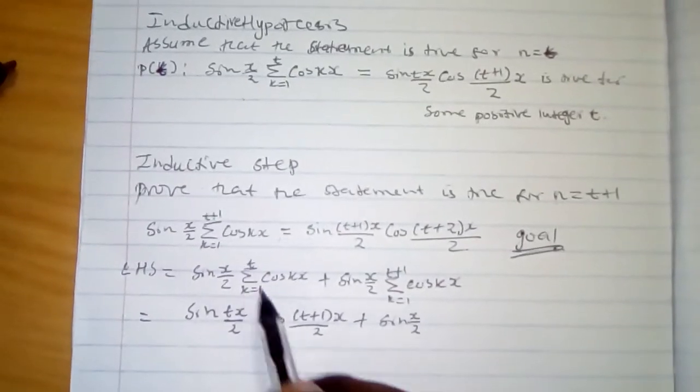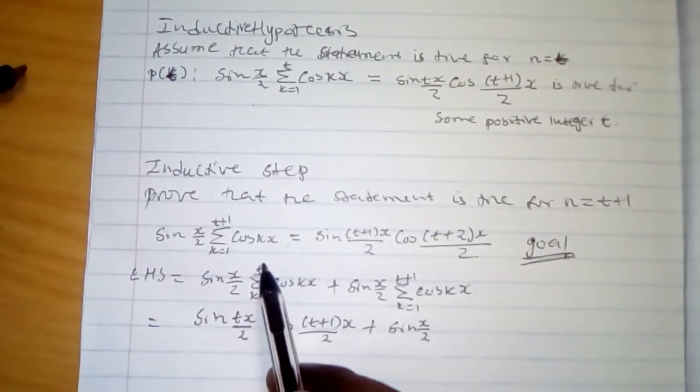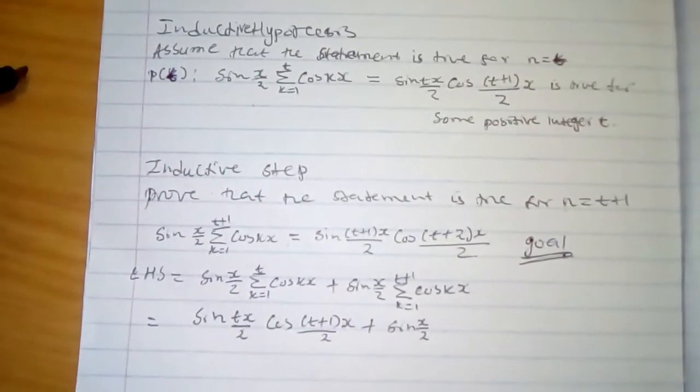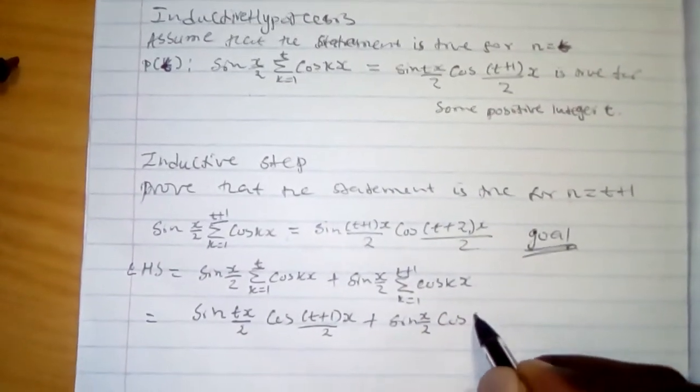Since here we have in sigma t, k is equal to 1, then is k cos kx. Then this one is going to be cos n squared.